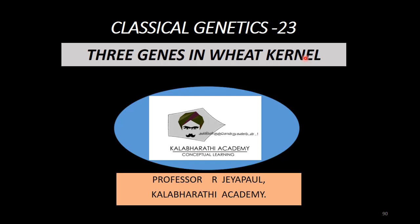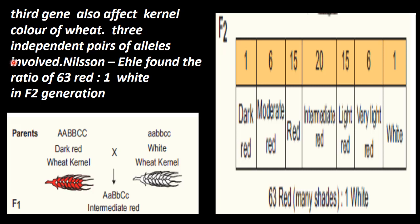Nizan and Eli found out that it is not two genes — there are three genes which control the color of the wheat kernel. This is also polygenic; a third gene also affects the kernel color of the wheat.